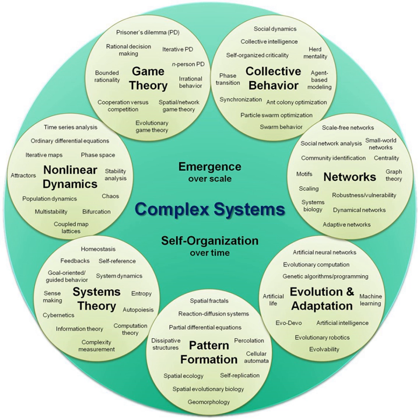Macrosystem — a larger system that influences clients, such as policies, administration of entitlement programs, and culture. Chronosystem — a system composed of significant life events that can affect adaptation.